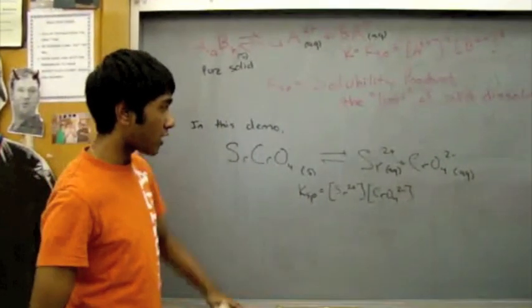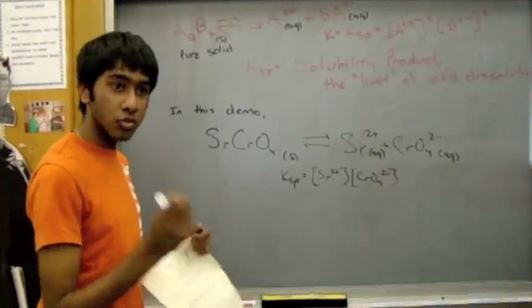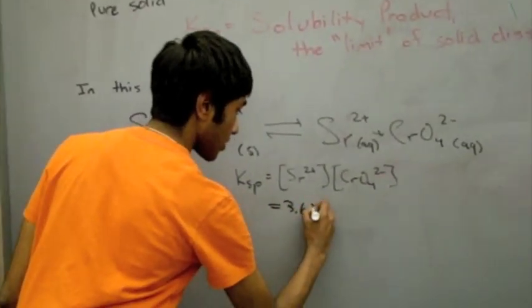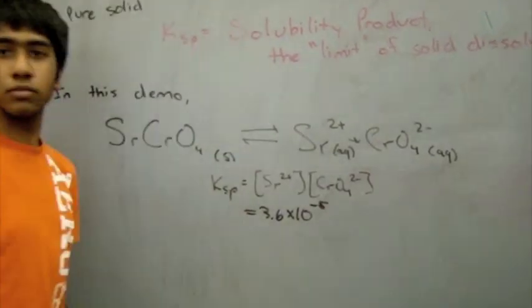In the demo we are about to explore today, a solid dissociates into its ions. And thus, K is equal to the product of its ions, according to their exponents.